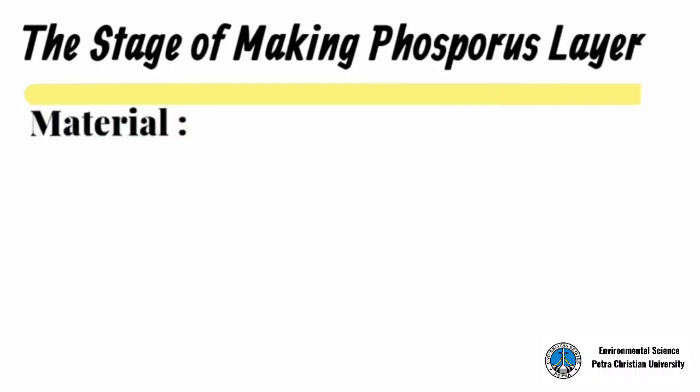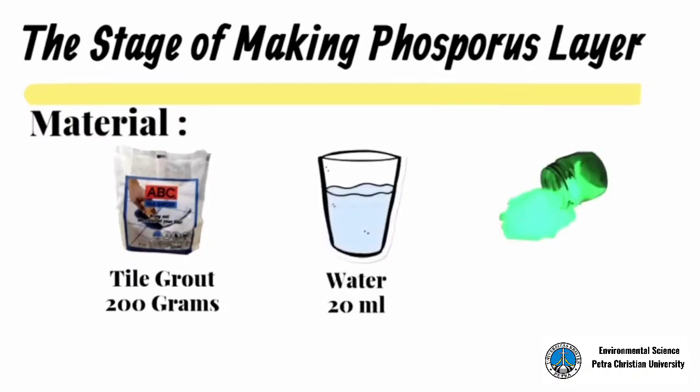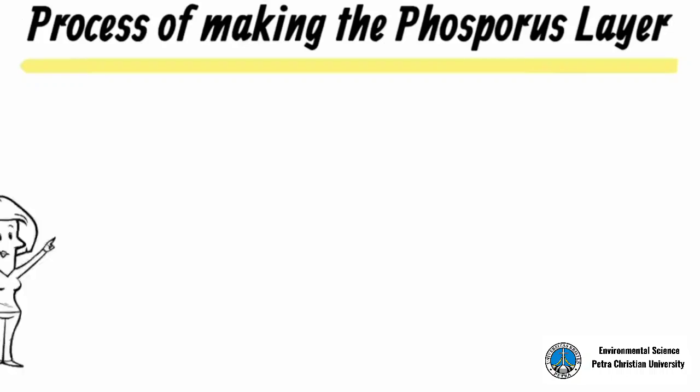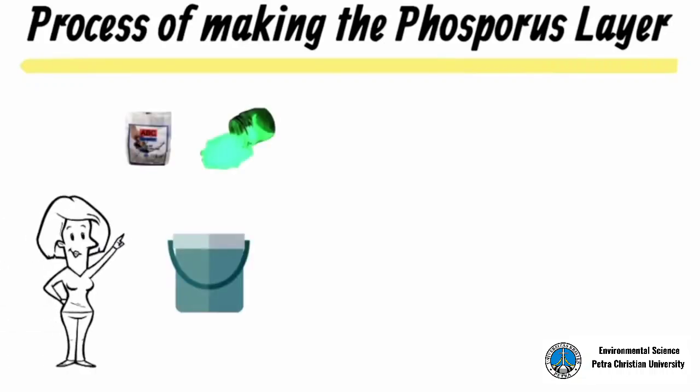The stage of making the phosphorus layer: the materials that we need in this stage are 200 grams tile grout, 20 milliliters water, 40 grams phosphorus powder with 13.8% phosphorus content. The process of making the phosphorus layer: first, mix the white tile grout with phosphorus powder and stir them until the mixture is evenly distributed.